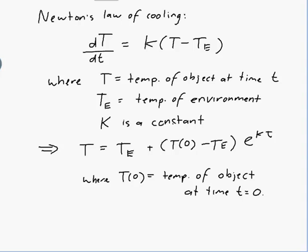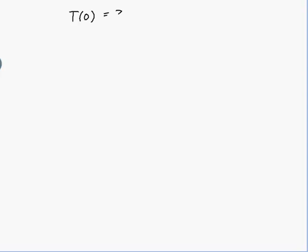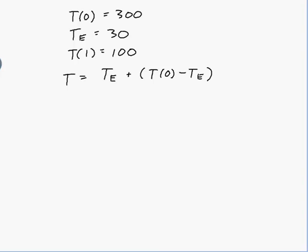Let me start a new page and read the question to identify all the values. The pot emerges at a temperature of 300 degrees Celsius, so T(0) = 300. It emerges into a workshop constantly at 30 degrees Celsius, so the temperature of the environment Tₑ = 30. It then says after one hour the temperature is 100 degrees Celsius, so T(1) = 100. I'm measuring time in hours.